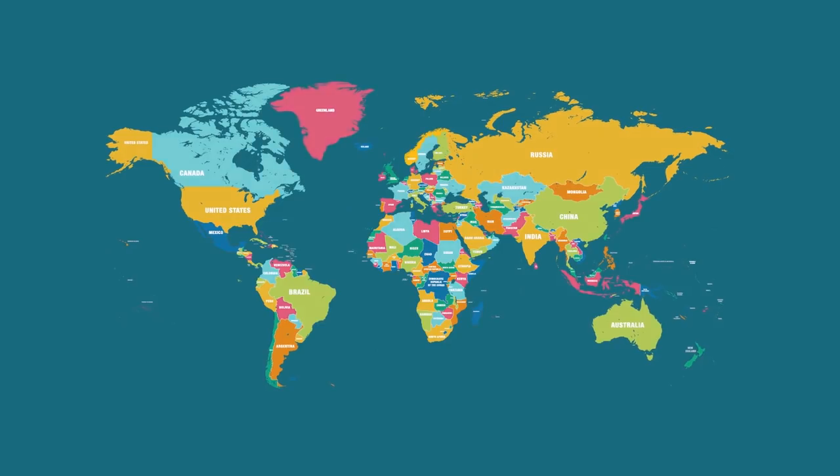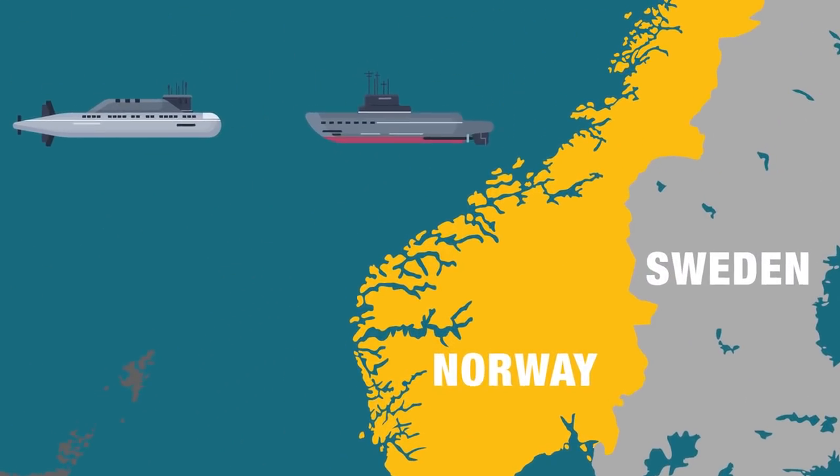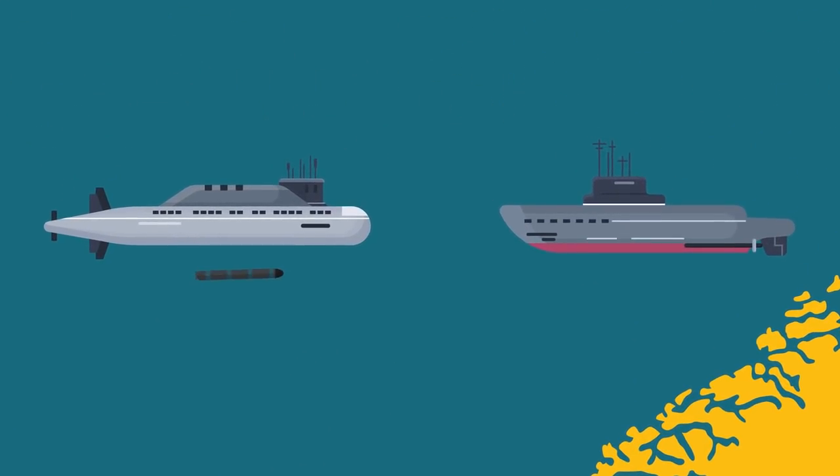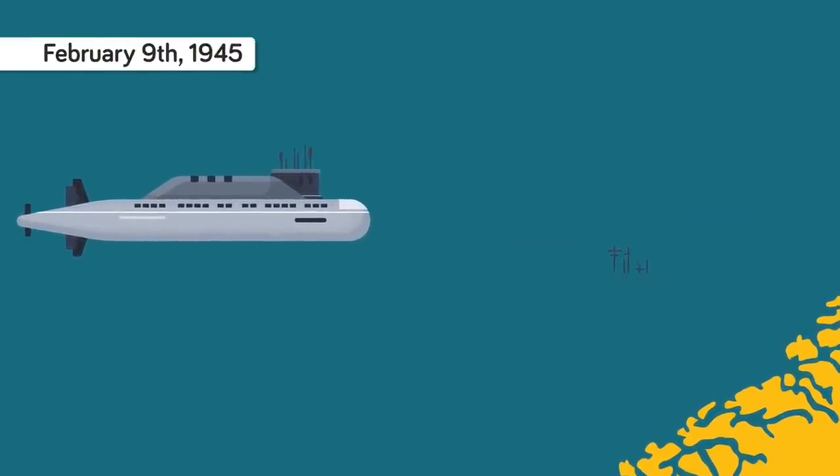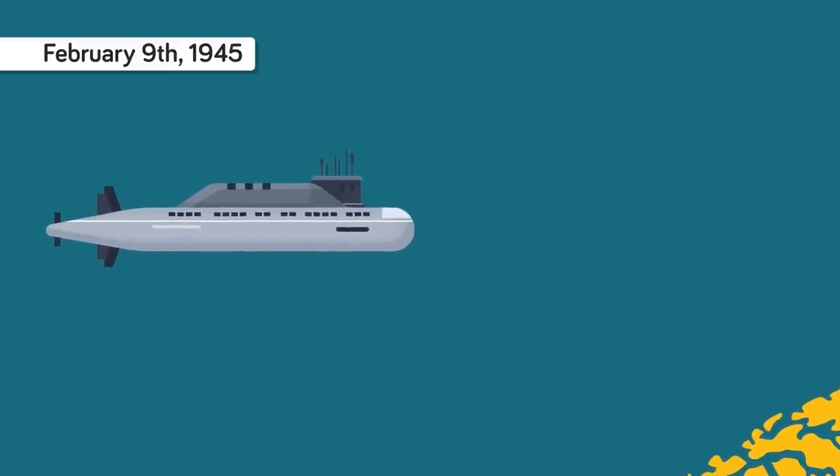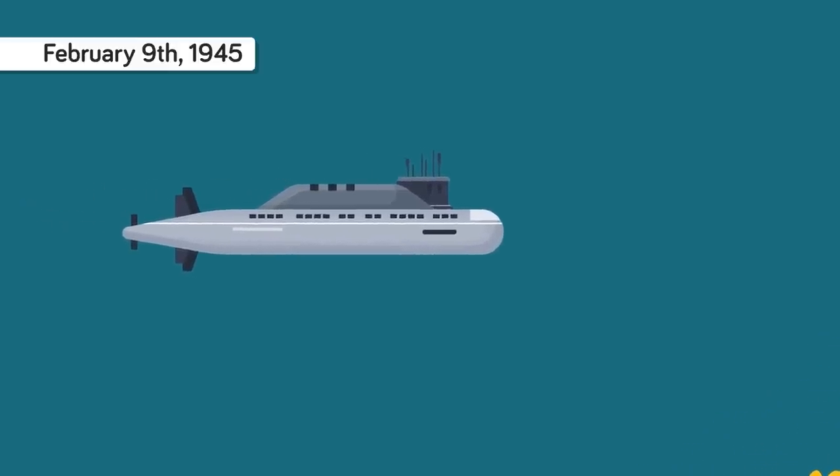43. The only sinking of a submarine by another submarine while submerged occurred on February 9, 1945 when the Royal Navy submarine HMS Venturer scored a direct hit on the U-boat U-864 off the coast of Norway.